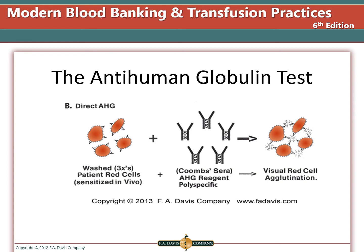In a direct antiglobulin test, the patient's cells are already sensitized. You wash them, add AHG, centrifuge, and visualize for agglutination. If a patient has a positive DAT, you cannot perform antigen typing such as weak D or any other that applies the indirect antiglobulin test, as it would give you a false positive result.